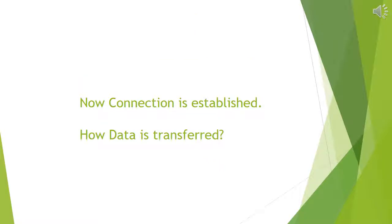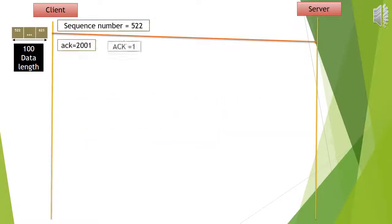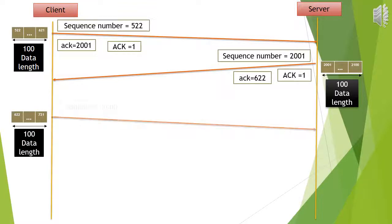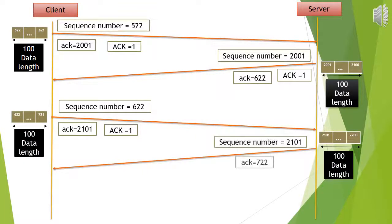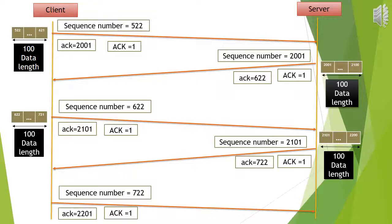Now the connection is established and we will see how data is transferred. Three things are needed for sending data: sequence number, acknowledgement, and the ACK flag. The client wants to send a 100-byte data length to the server: sequence number is 522, acknowledgement number equals 2001, and ACK flag is 1. The server will send the requested data back to the client with sequence number 2001, acknowledgement will be 522 + 100 = 622, ACK flag equals 1, and the server will also be sending 100 bytes of data.